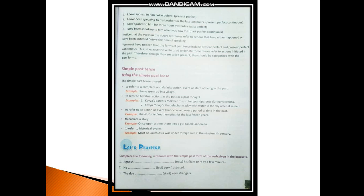Now talking about simple past tense — where do we use it? Firstly, to refer to a complete and definite action, event, or state of being in the past. For example: 'Kavya grew up in a village.' Secondly, to refer to habitual actions in the past or a past thought. For example: 'Kavya's parents took her to visit her grandparents during vacations,' or 'Kavya thought that elephants play with water in the sky when it rained.'